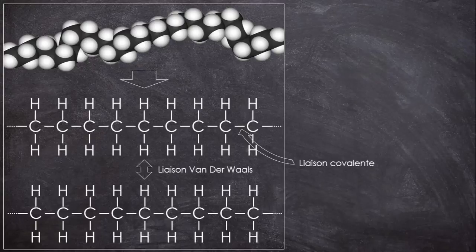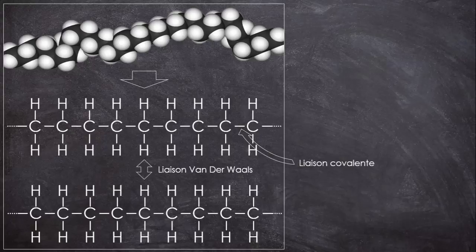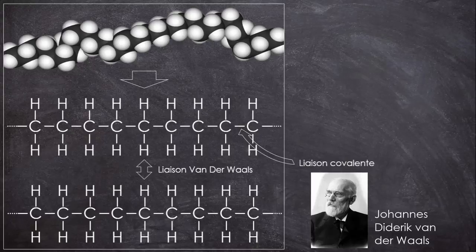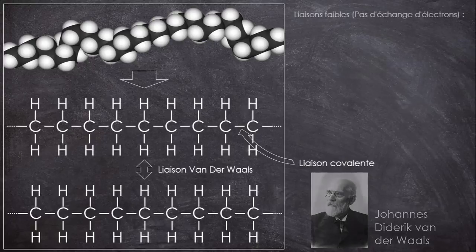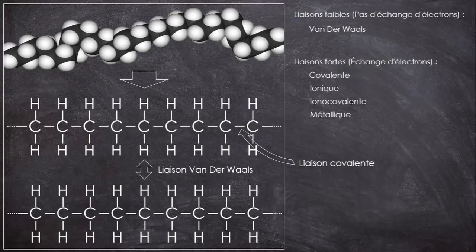Là, il n'y a pas d'échange d'électrons. C'est simplement le fait que les atomes contiennent des charges, positives du noyau et négatives des électrons, qui les lie, un peu comme des petits aimants. C'est une liaison de Van der Waals, du nom du gars qui a bossé là-dessus, et c'est ce que l'on appelle une liaison faible, par opposition aux liaisons fortes que l'on a vues juste avant, où des électrons sont échangés. Cela fait des plastiques des matériaux généralement peu résistants et qui ne tiennent pas en température.